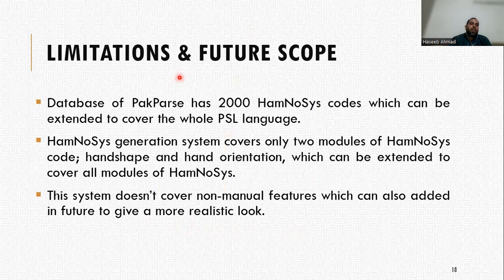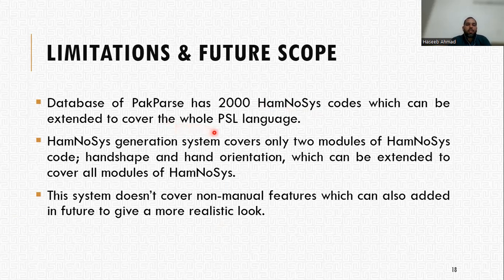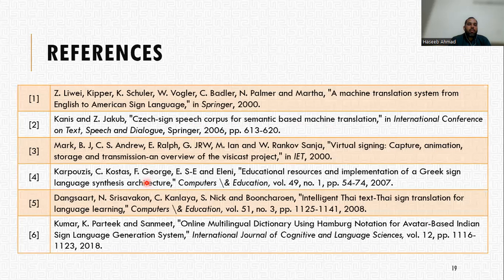The limitations are that the database currently contains 2,000 HamNoSys codes, which can be extended to cover the whole Pakistan Sign Language. Additionally, the HamNoSys generation system currently covers only two modules — hand shape and hand orientation — which can be extended to cover all other modules such as non-manual features and two-handed signs. Here are some of the references. Thank you, and I'm open for any questions or queries regarding this system.